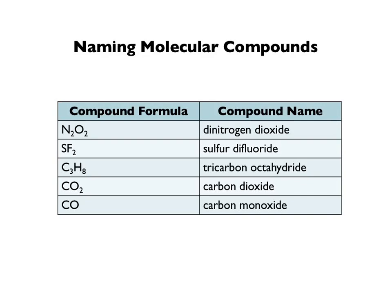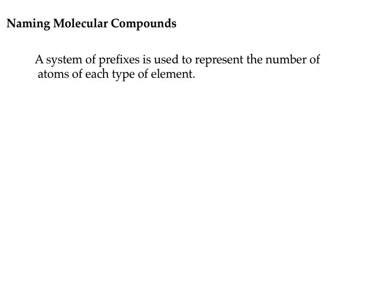Then we have carbon dioxide, which you've probably heard of before: one carbon, two oxygens. And then we also have carbon monoxide — that's poisonous — which has only one oxygen. Whereas carbon dioxide is two. Notice that these two compounds are made of the same elements: carbon and oxygen and carbon and oxygen. The difference between these two is how many oxygens they have. So it is very important that we're writing how many elements there are: one carbon, two oxygens versus one carbon, one oxygen.